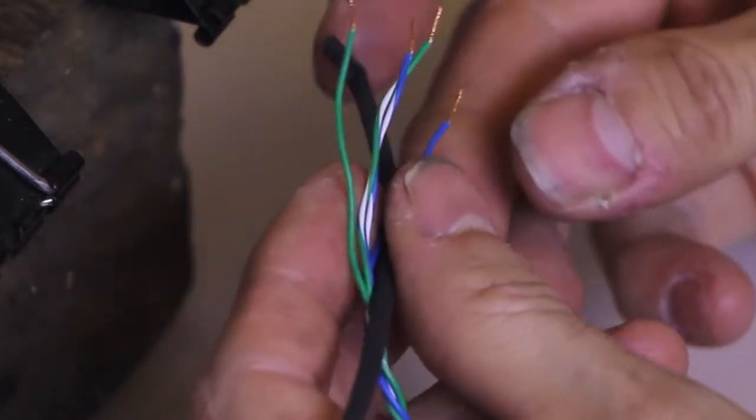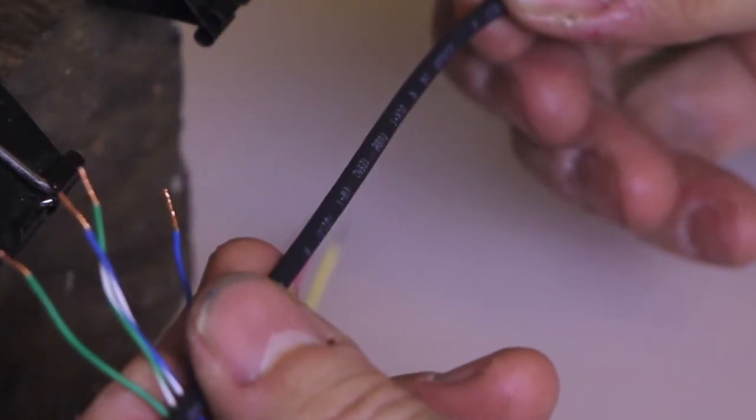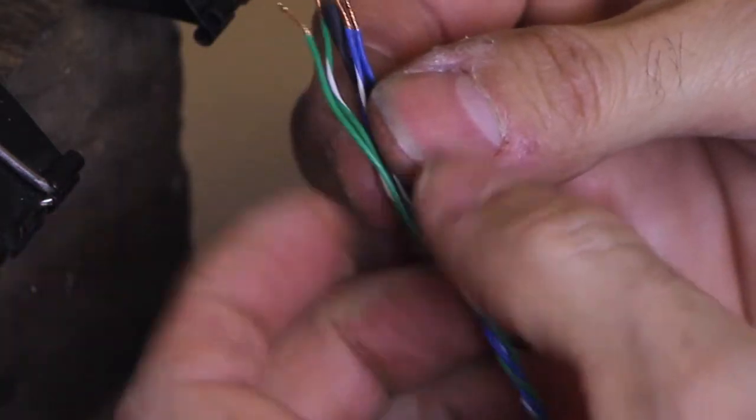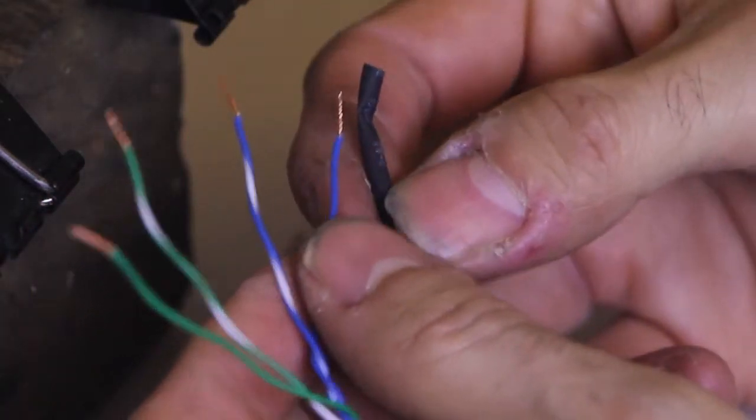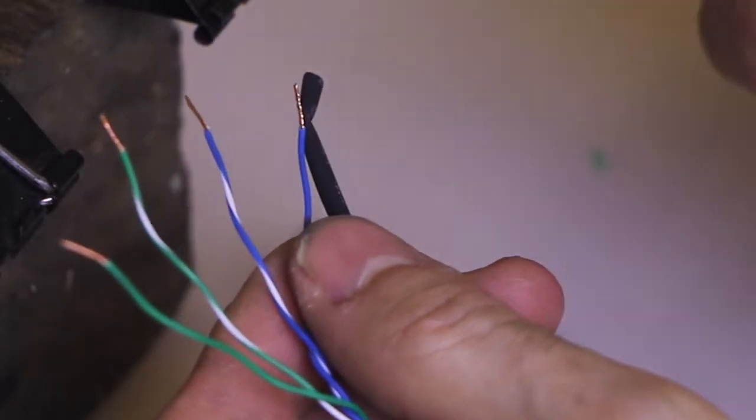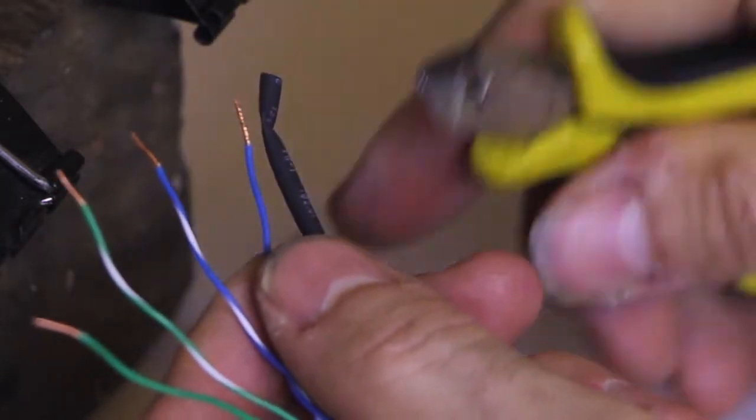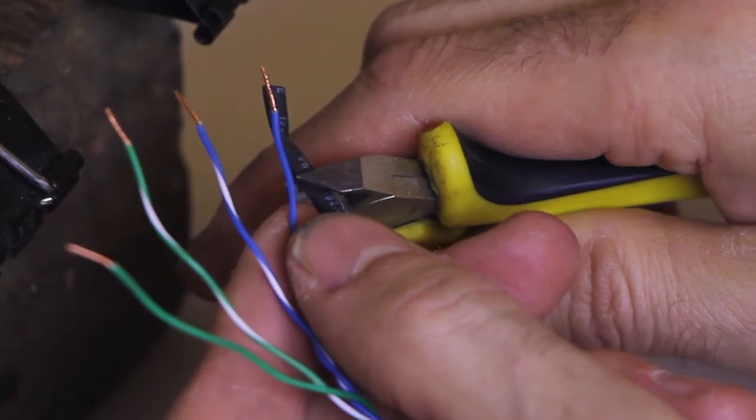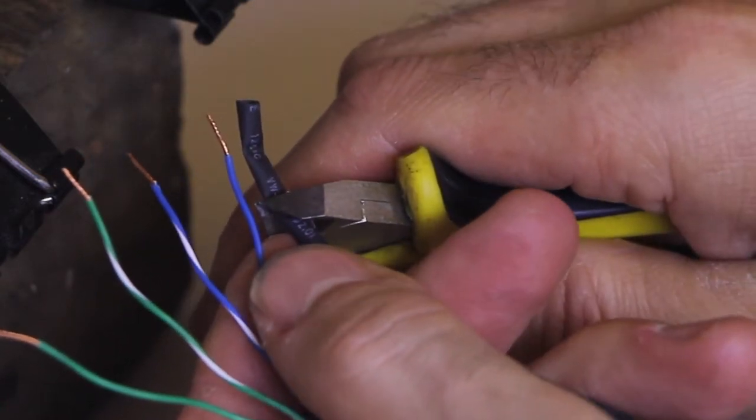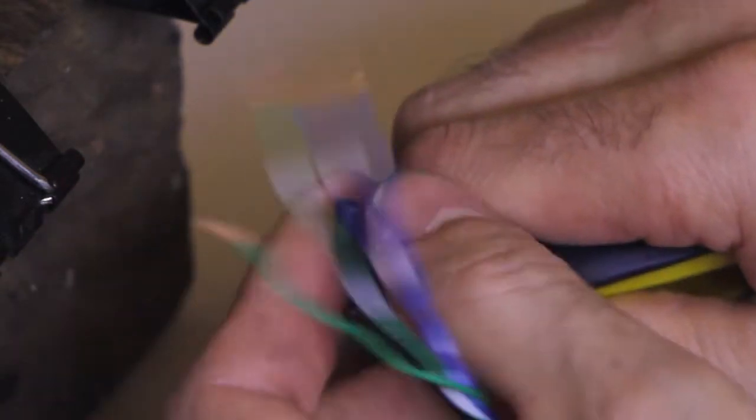Grab some 2mm heat shrink. Now we've purchased 2mm, it says 2mm on the heat shrink itself but it's close to 3mm. Still shrinks enough though. We're going to cut four pieces to go over those four conductors. You probably want to double the length of the conductor that you stripped off, so that's a good 12mm there, even longer. Cut four of those.